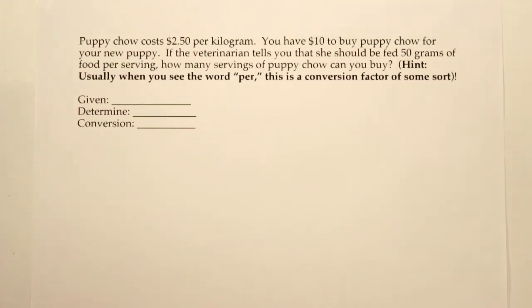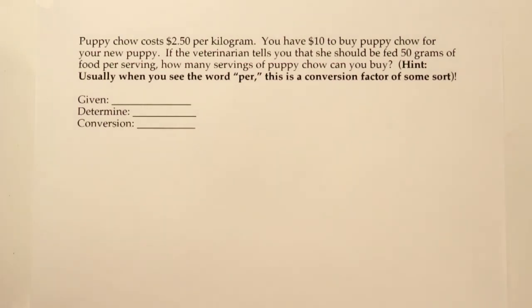This next factor label problem gets a little bit trickier because we're given a lot more information than in some of the previous examples. This one tells you puppy chow costs $2.50 per kilogram, you have $10 to buy puppy chow for your new puppy, and the vet tells you she should be fed 50 grams of food per serving. We want to know how many servings of puppy chow you can buy.